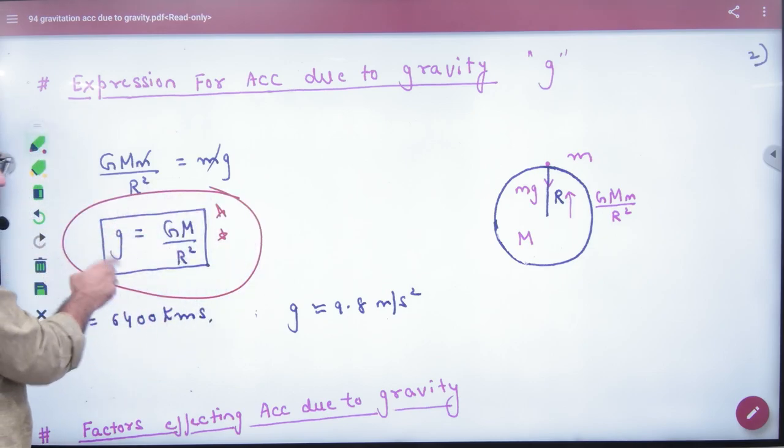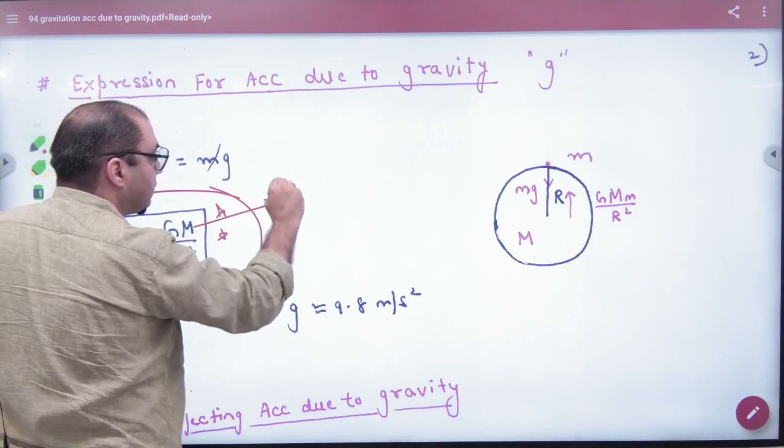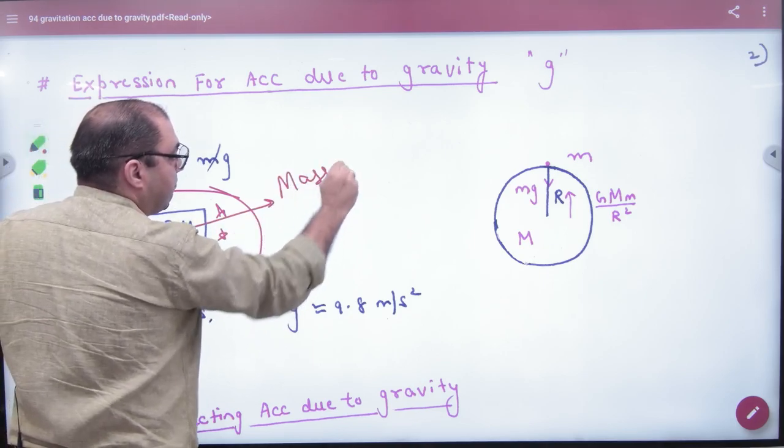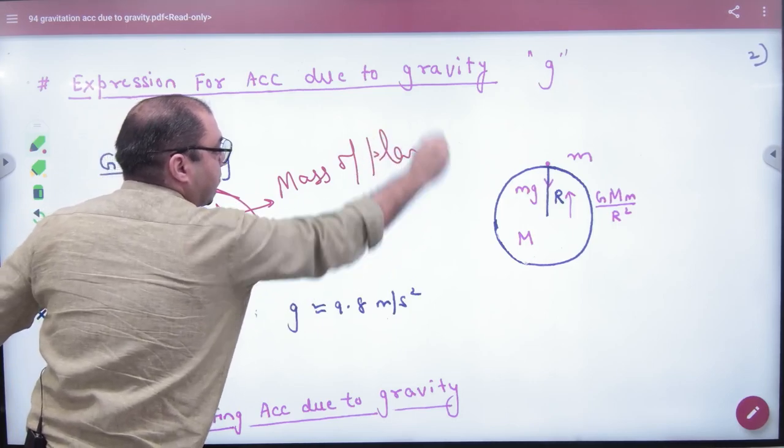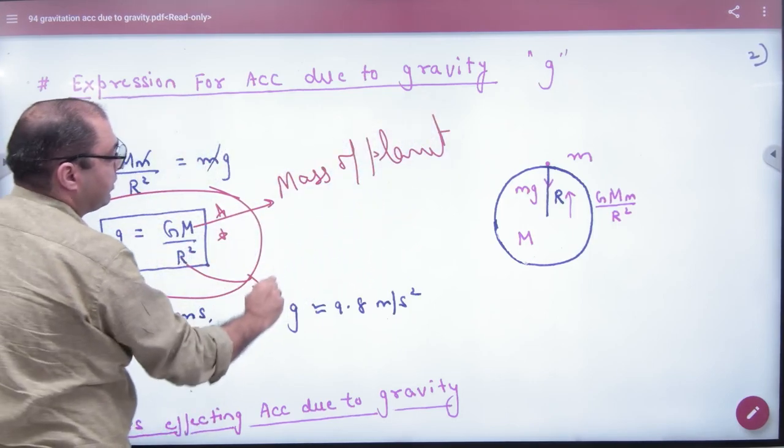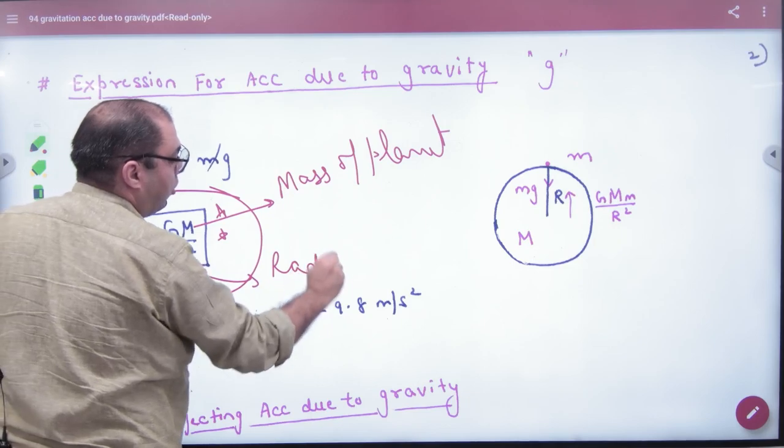Important is that small g formula is very important. Please mark this and write in the formula booklet. Acceleration due to gravity g = GM/R², where capital M is mass of planet and capital R means radius of planet.